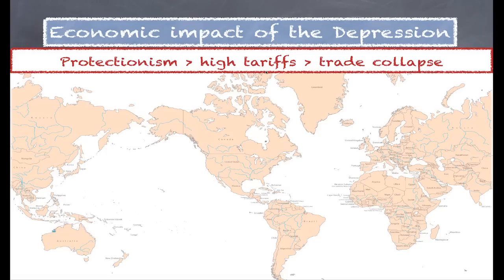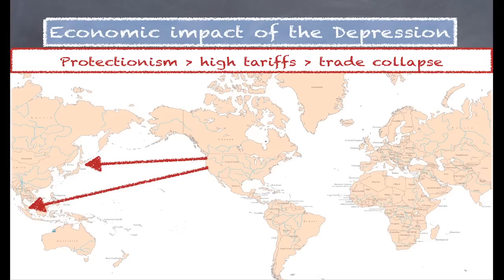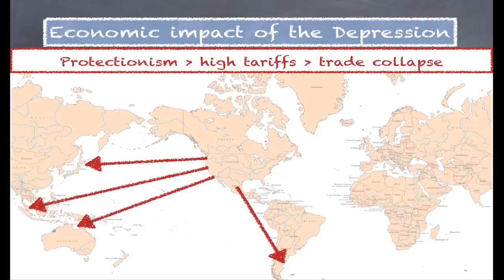How did the Depression radiate out from America? Just as an example, much less silk was bought from Japan, causing an economic crisis there. Because American industry needed less rubber and tin, the price of rubber and tin fell in Burma, Malaysia, and Thailand. In Australia, which depended heavily on exports of wool, wool prices fell and Australian farmers experienced an economic crisis. In Argentina, it was beef — less was bought by the American consumer, prices fell and Argentinian farmers were hit. The same with Brazil and coffee. Less raw materials were needed from Africa, plunging many African economies into the Depression.